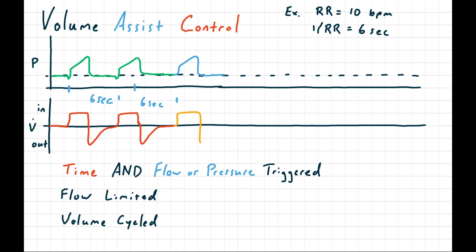Most ventilators also calculate a spontaneous minute ventilation, which is the minute ventilation counting only assist breaths and no control breaths. Sometimes, if your patient is doing really well and you're weaning them from the ventilator and they're firing their own assist breaths consistently, you might set your respiratory rate to an absurdly low rate like four breaths per minute to test them. That way you have a backup rate so that if they unexpectedly become apneic they survive, but you can prove their drive to breathe is life-sustaining.